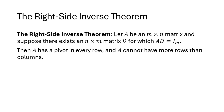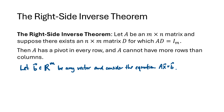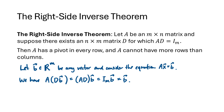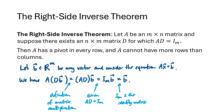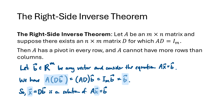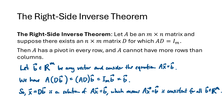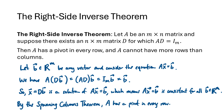For the proof of the right-side theorem: this should remind you of the spanning columns theorem, which talks about pivots in every row and solutions of Ax = b for any vector b. Let b be any vector in Rᵐ. We want to show Ax = b always has a solution. If we multiply A times Db, by associativity that equals (AD)b = Ib = b. So x = Db is always a solution of Ax = b for any b, and the spanning columns theorem tells us A has a pivot in every row.